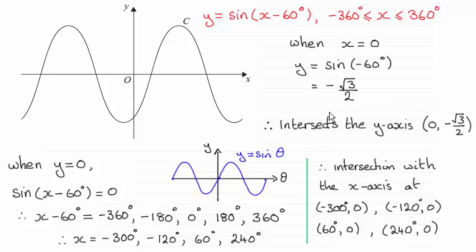How I did it: for where any graph crosses the y-axis, just set x equal to 0. So when you put x equal to 0 in here, you've got the sine of minus 60 degrees, which is minus root 3 over 2.